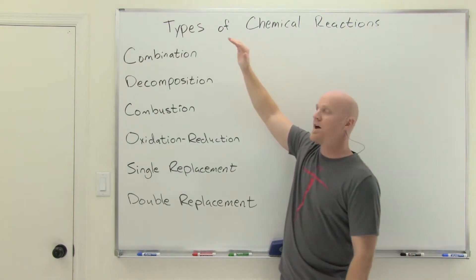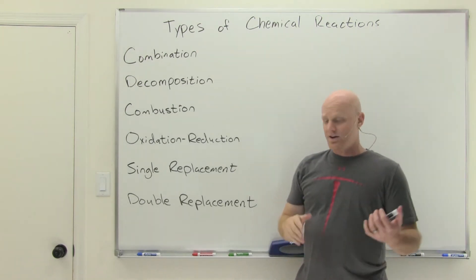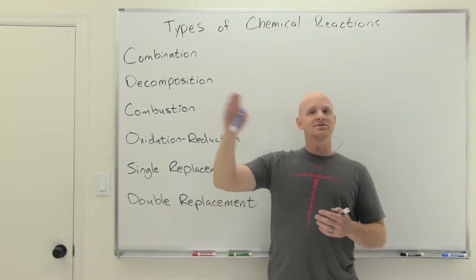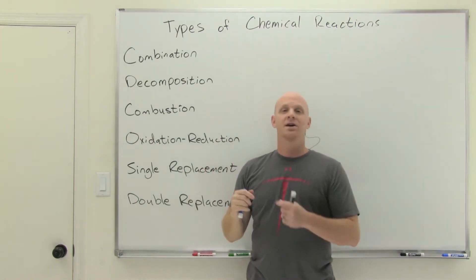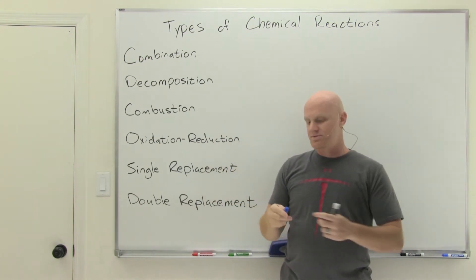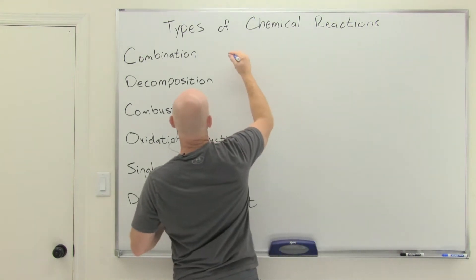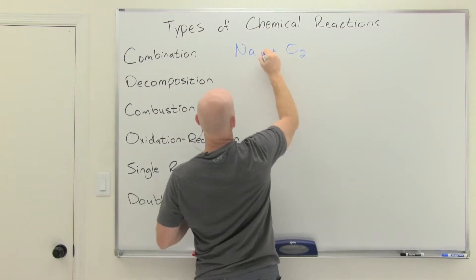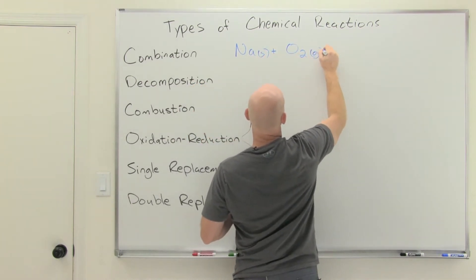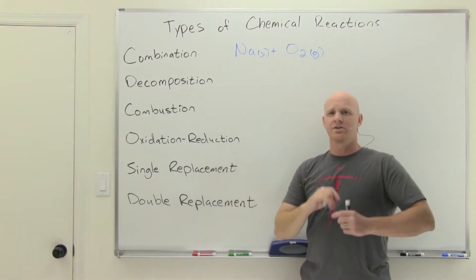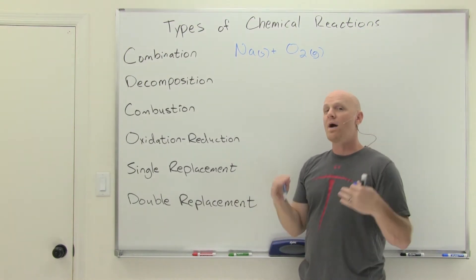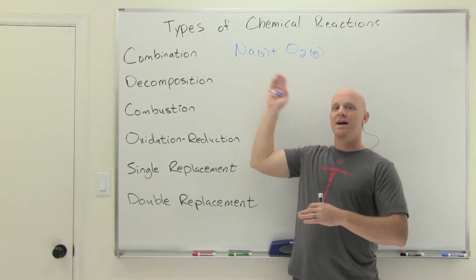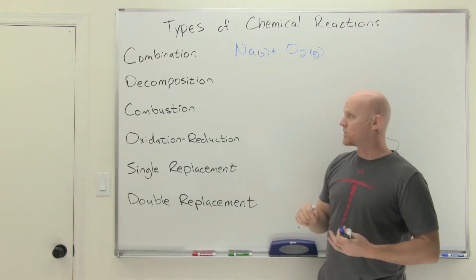We're going to start with a combination reaction. In a combination reaction, you're going to have usually two elements or compounds — or one of each — combine to form one substance. The example on your handout is sodium combining with oxygen: solid sodium and oxygen gas. We're actually going to be able to predict the products without them being given to you, and then balance.